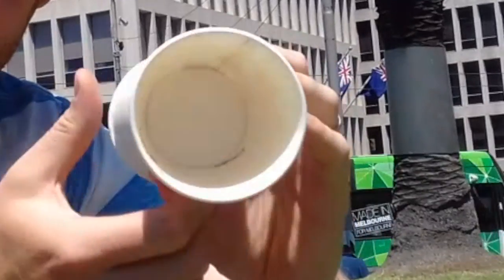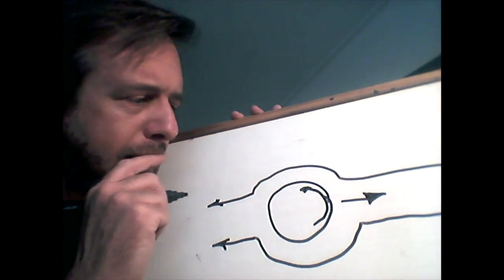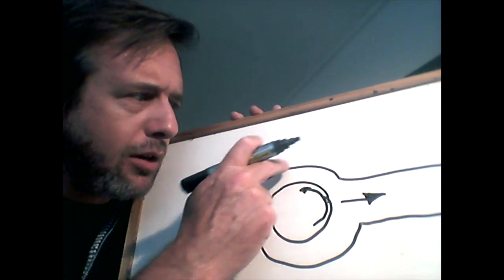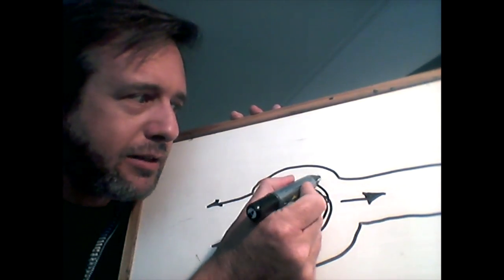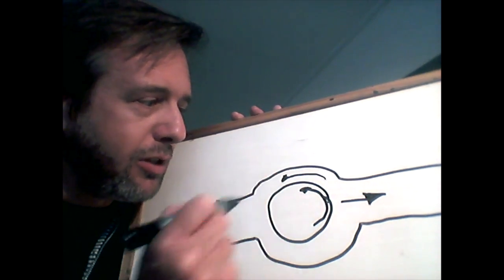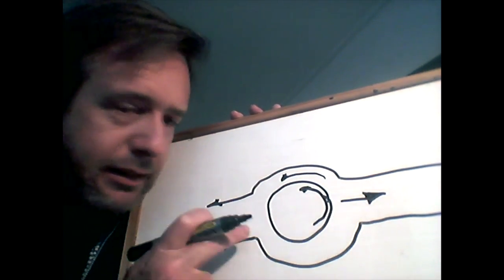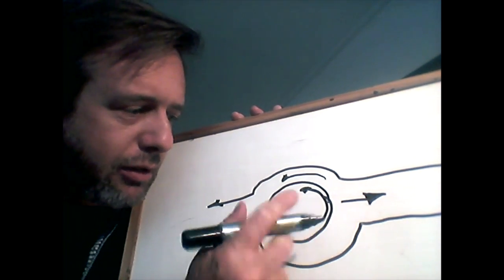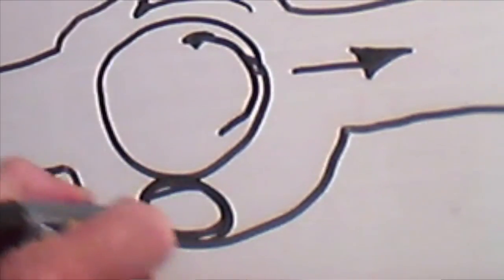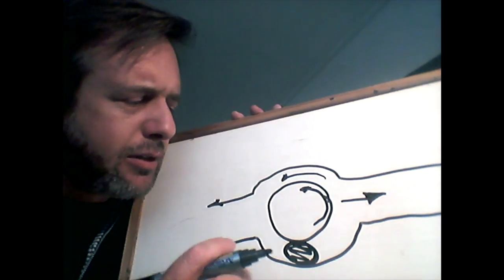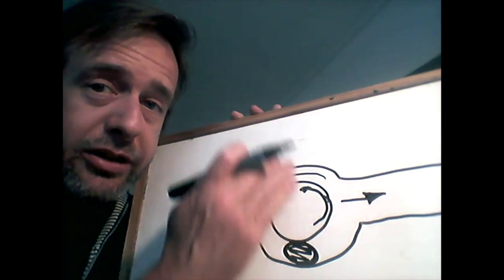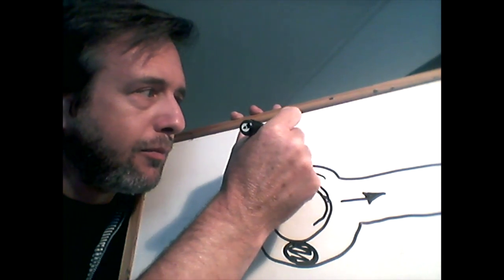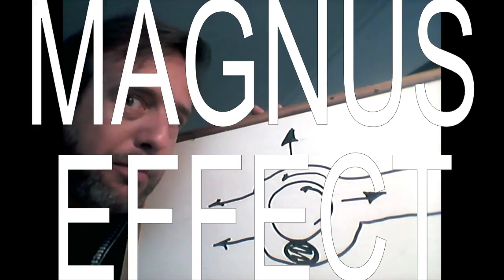A couple of things start to happen. For a start, the air that's passing over the top is now passing just a little bit faster thanks to the movement of this object, whereas the air that's passing underneath it starts to build up because we've got some of this air moving in this direction. So we've got a kind of a buildup of air just underneath. This uneven air on either side of the object means that we end up with a resultant new force in this direction. This is called the Magnus effect.